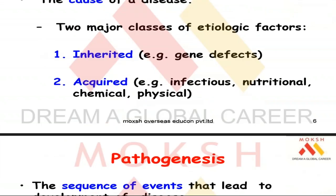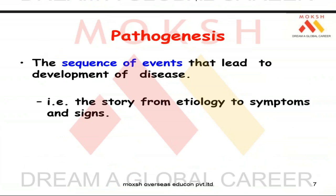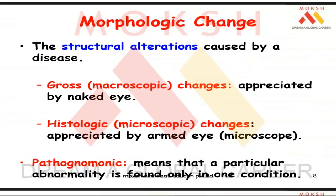The second aspect is pathogenesis: the story, the sequence of events that leads to development of a disease from etiology to symptoms and signs. The structural alterations caused by disease are morphological changes. If there is a change at the cellular level, there must also be a gross change — a macroscopic change — what I see with my naked eye. For example, the liver not looking normal from outside is a macroscopic change. If I take a biopsy section and use a microscope, those are microscopic changes.